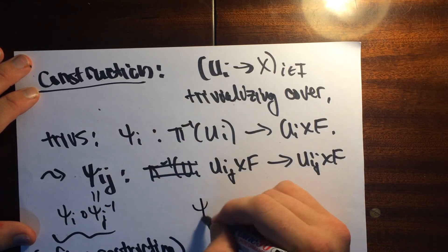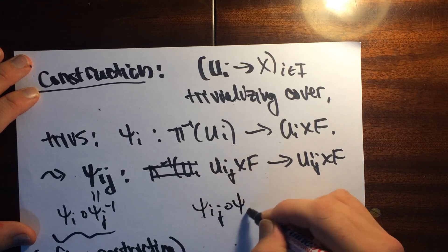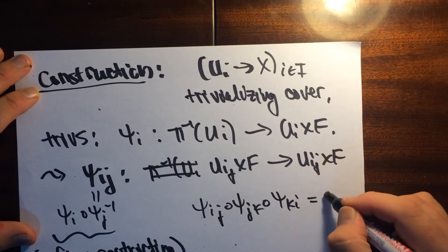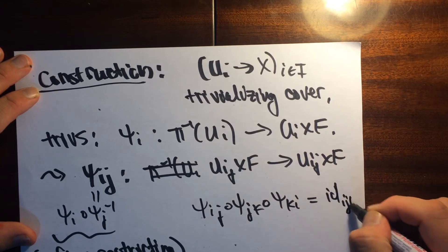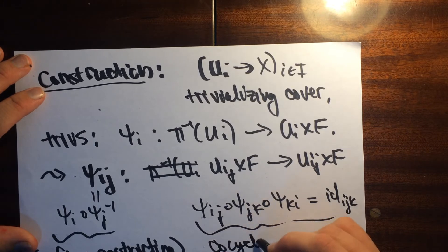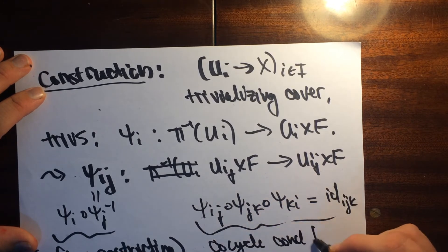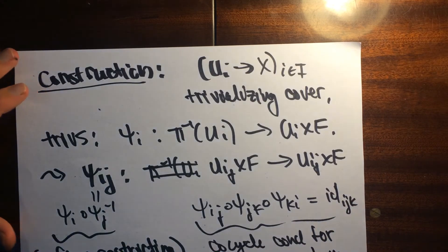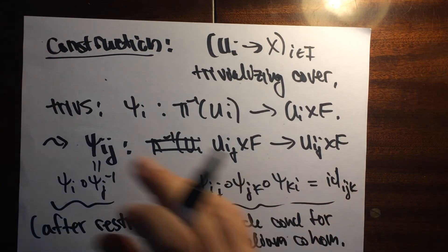We can check that this thing satisfies the cocycle condition. Psi ij Psi jk Psi ki is equal to the identity on uijk. And so this is the cocycle condition for non-abelian cohomology.